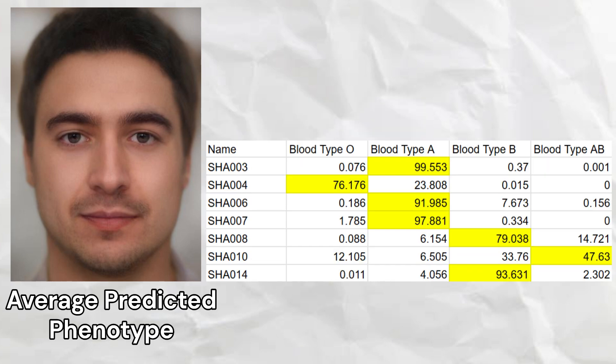The most common blood type among the group was blood type A, which three people had, followed by blood type B, which two people had, followed by blood type O and AB, each of which one person had.